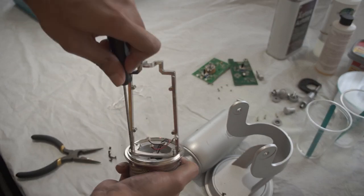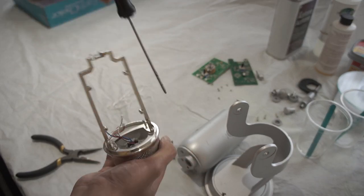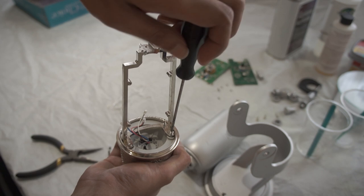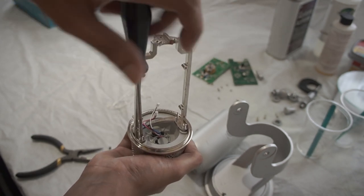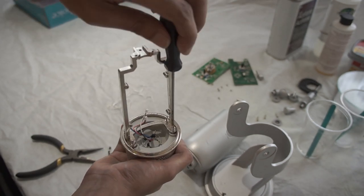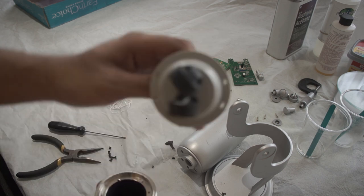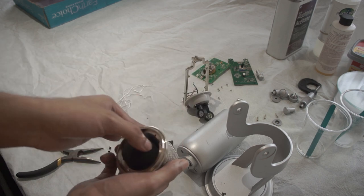Then remove the four screws connecting the mesh and the stand. Now the whole assembly should come apart. Don't forget to remove the foam inside.